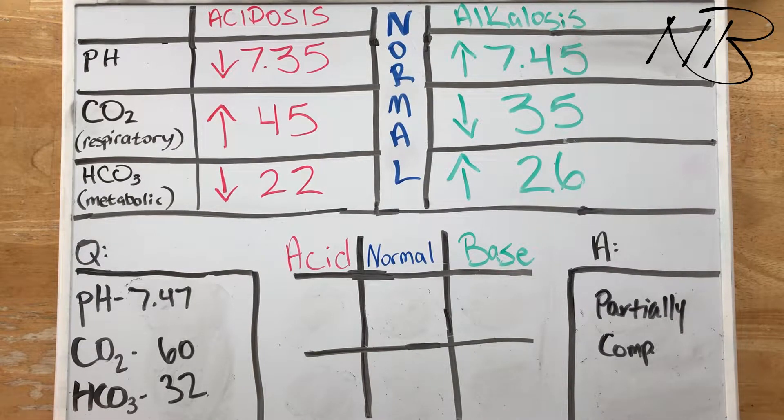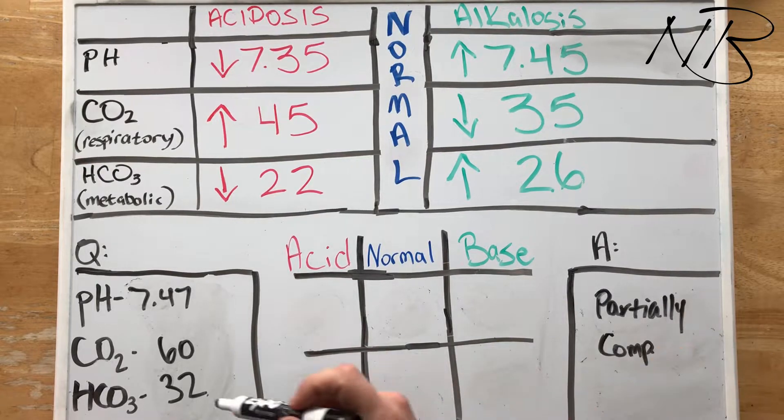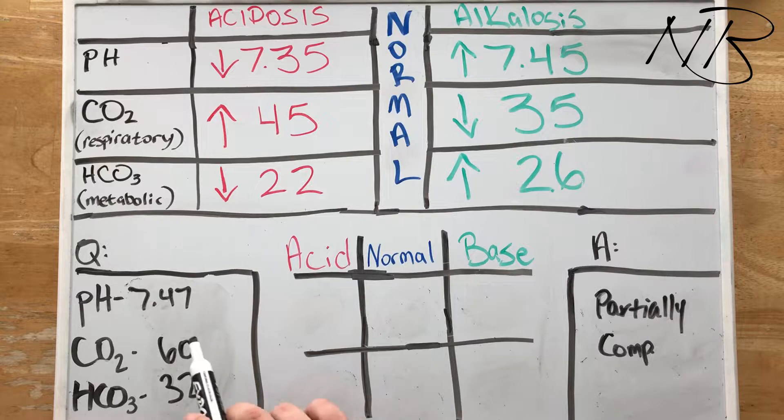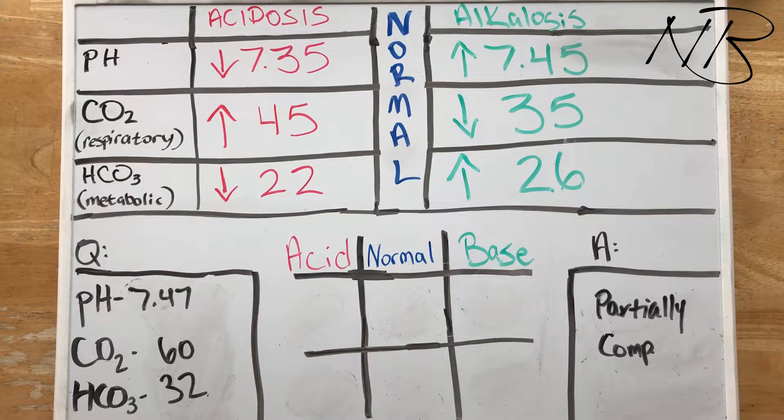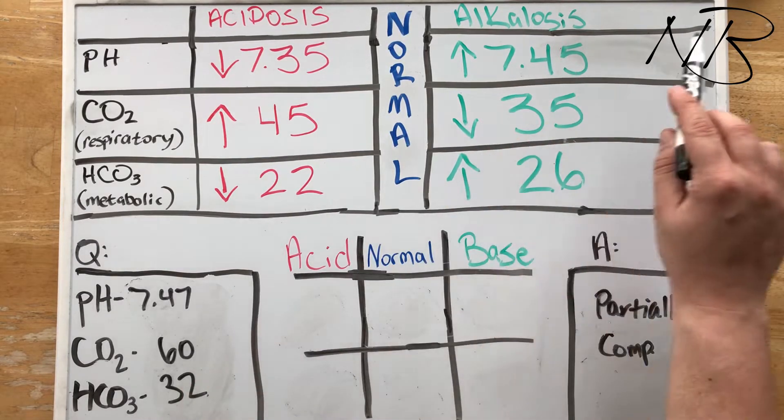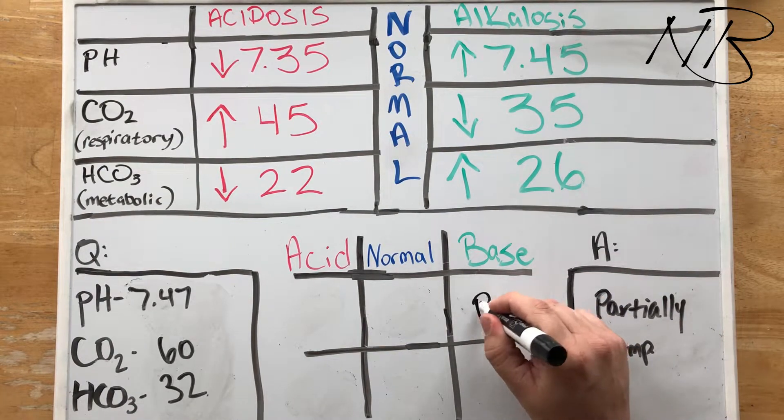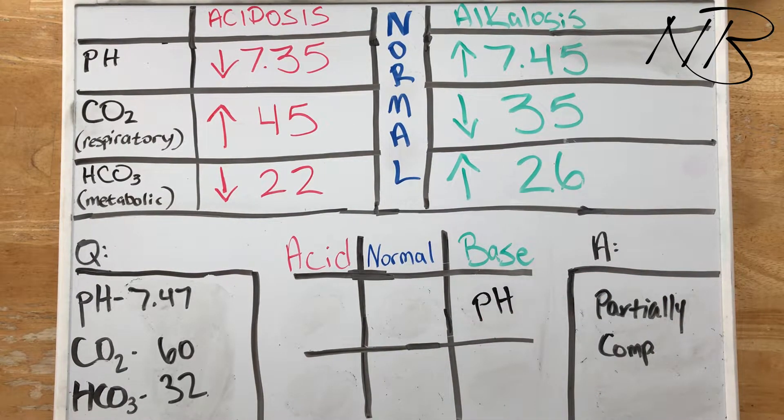Let's go ahead and dive into the second one. In this example here, our CO2 and our bicarbonate are still the exact same as the previous one. We're still at 60 for the CO2 and 32 for our bicarbonate. However, our pH is now 7.47. So looking at the pH first, 7.47 is above 7.45, so it's going to go in the basic column.